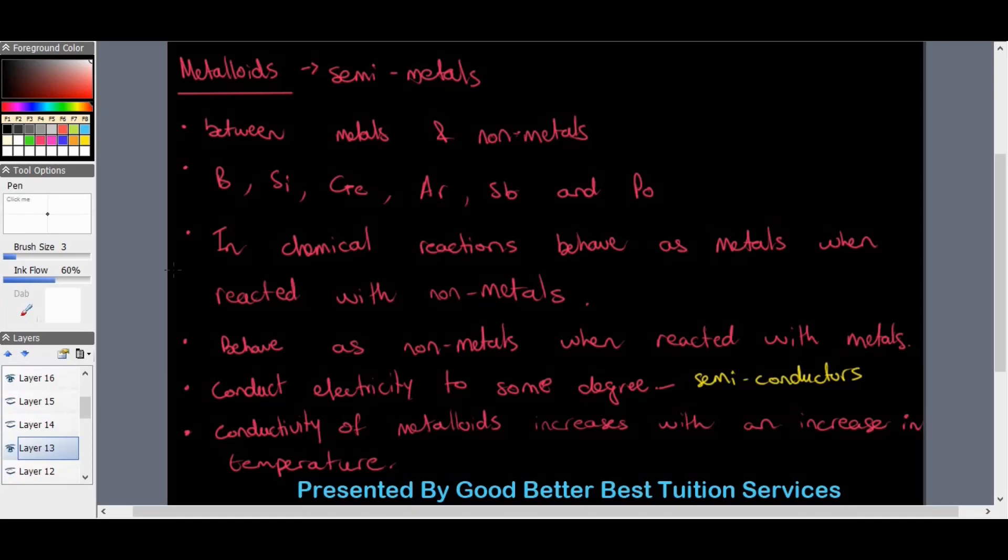In chemical reactions metalloids behave as metals when reacted with non-metals. However, they will behave as a non-metal when they are reacted with metals.